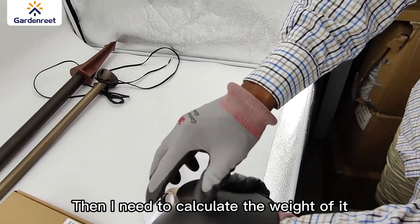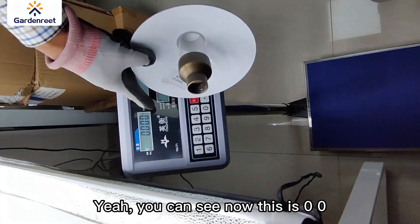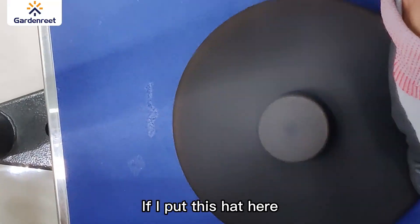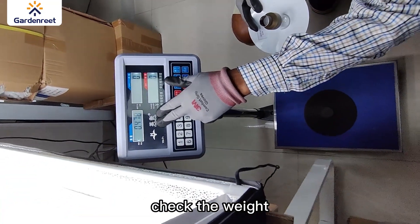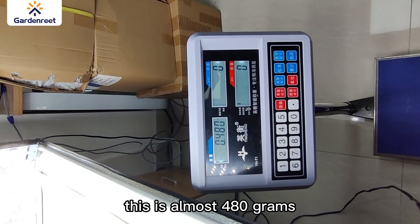I need to calculate the weight of each. This is the weight machine - I need to reset it. You can see, now this is zero. If I put this hat here, check the weight. This is almost 480, almost 500 grams.